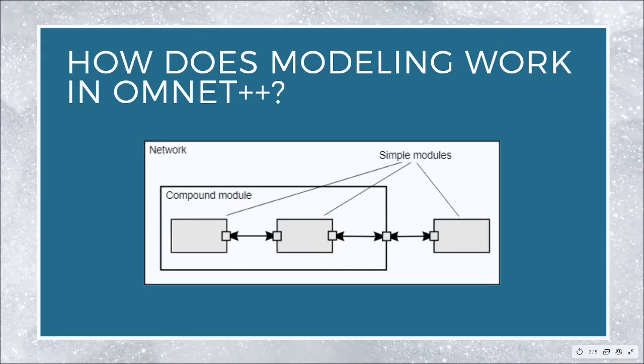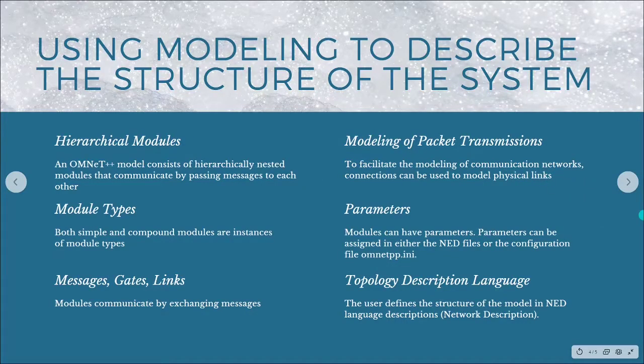Messages can be sent via connections that span modules or directly to other modules. Let's look at how we can use modeling to describe the structure of a system. OMNeT++ provides efficient tools for users to describe the structure of an actual system. Some of the main features are hierarchical models, module types, messages, gates, links, modeling the packet transmissions, parameters, and topology description language.